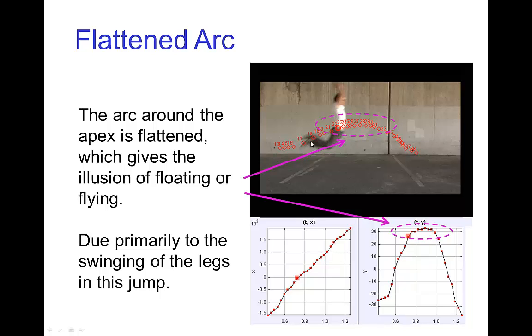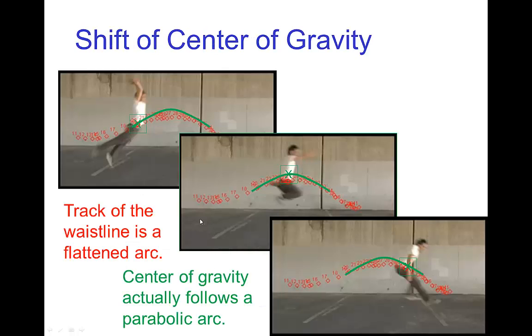This effect is primarily due in this jump to the swinging motion of the legs. So what's happening is the center of gravity which I marked here in green is actually following a parabolic path of action. What's being tracked is not the center of gravity but the location of the waistline. And that is flatter because the center of gravity has actually shifted higher in the torso when the person swings their legs upward. So that is what causes this illusion that the center of gravity in this big jump is flatter.